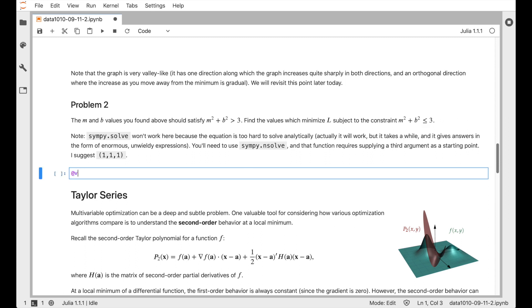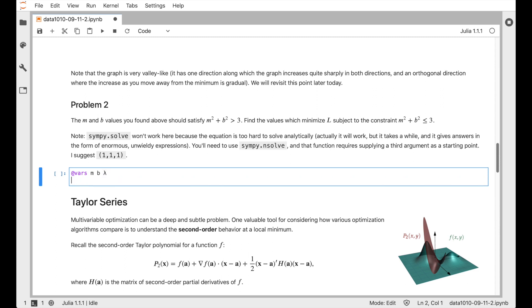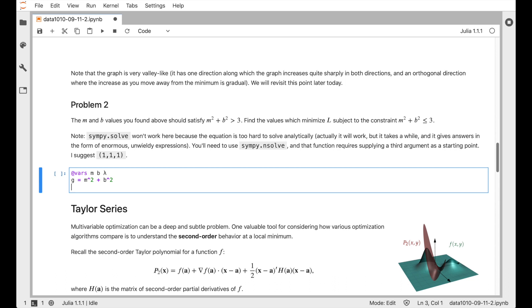So we'll begin by declaring m and b and lambda to be variables. And we'll let g be the constraint function, which is m squared plus b squared. You could also do m squared plus b squared minus 3. That would be just as good. And we're just going to follow the instruction. So we're asked to use n-solve instead of solve, so we'll use a numerical solver.